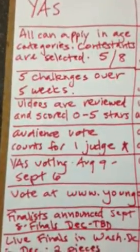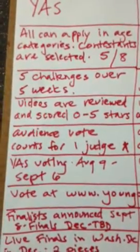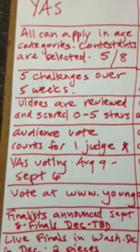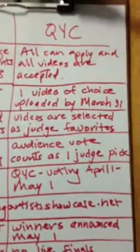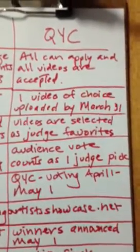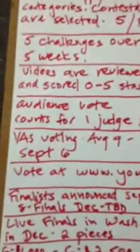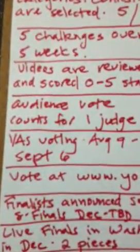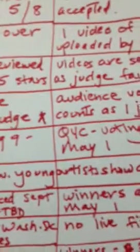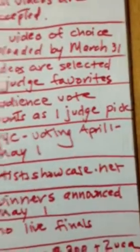In the Young Artist Showcase, the voting will start August the 9th and culminate September the 6th. In Quest for Creativity, the voting started April 1st and it goes until May the 1st. Voting is at YoungArtistsShowcase.net.